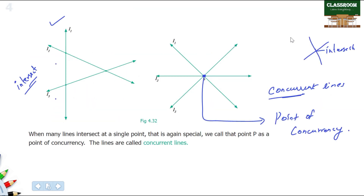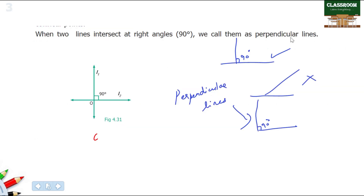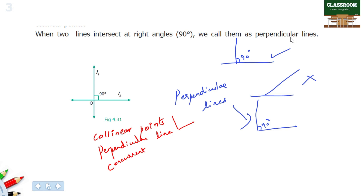So what will we check in this chapter? Collinear points — points on the same line. Next, perpendicular lines — lines in 90-degree form. Next, concurrent lines — two or more lines that intersect. Point of concurrency. These four points in this chapter are very important.